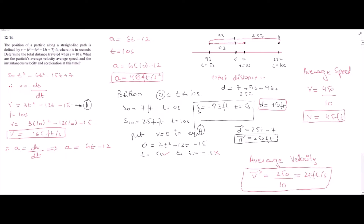So we have found the instantaneous velocity, that's the first answer; instantaneous acceleration, the second answer; and the total distance, the third answer; along with the fourth and fifth answers for average velocity and average speed. I hope you find this video helpful. If you do, please make sure to subscribe to this channel and turn on the bell icon for daily updates. If you have any questions, ask in the comment section and I will answer as soon as possible. Thank you.